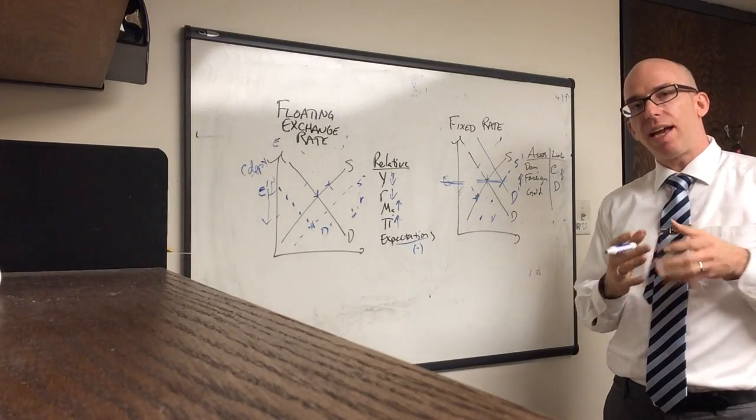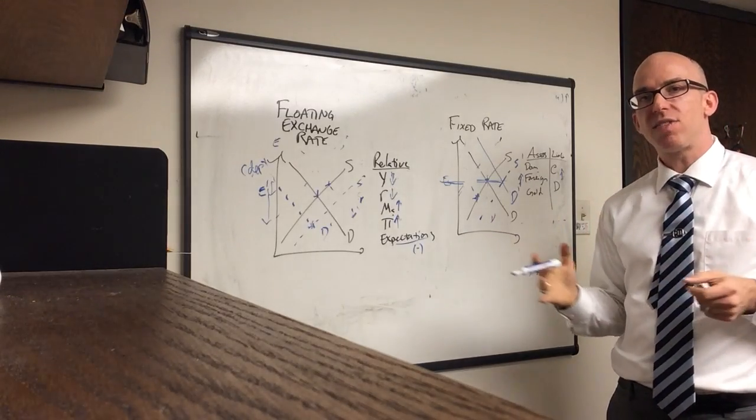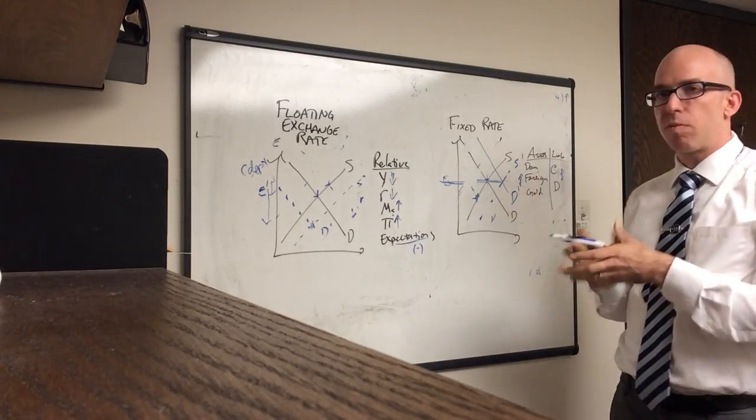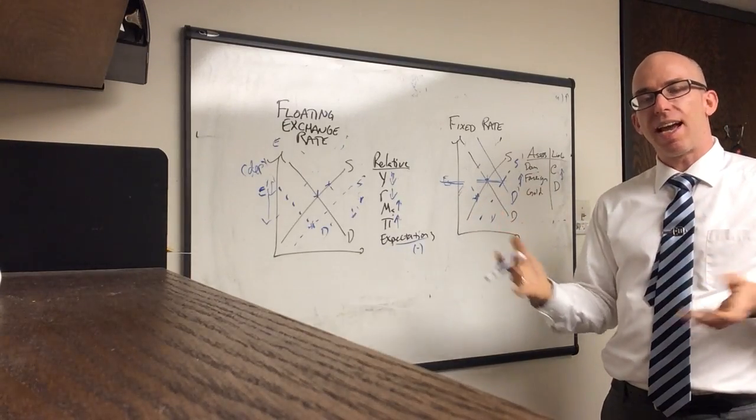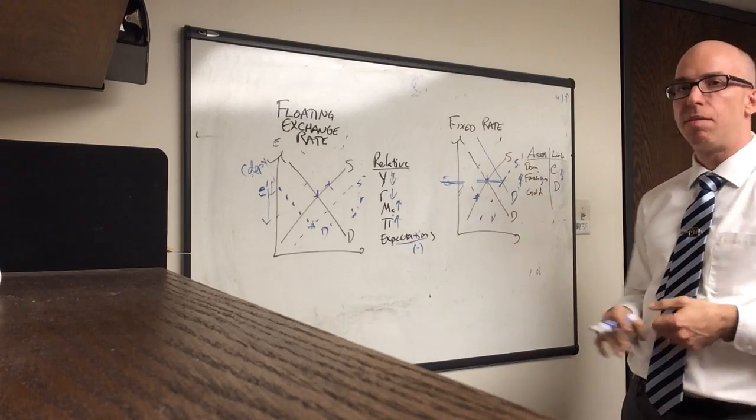And at the same time, that will cause them to have to print money on the other side of the balance sheet to maintain that balance. And so this actually means that the central bank holds more and more US or European assets or gold, but at the same time, they have to issue currency to make up for it.